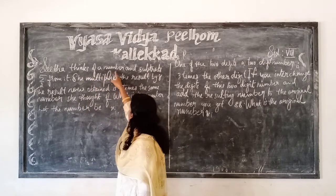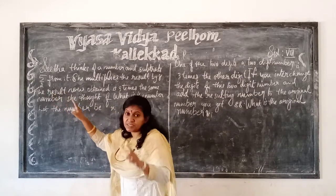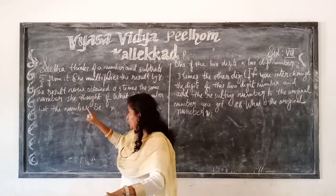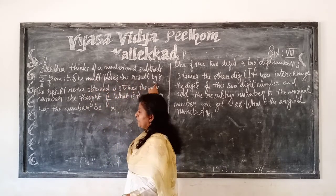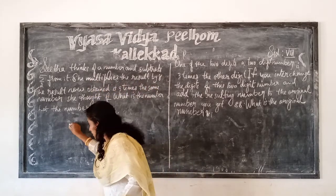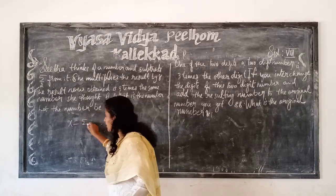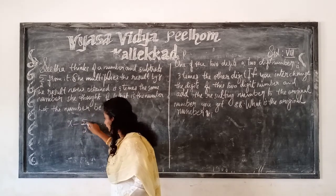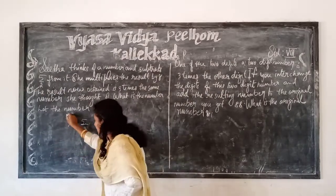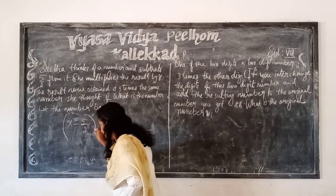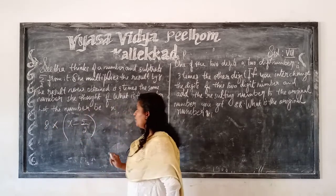This number was x and we subtract 5 by 2 from it. That means x minus 5 by 2. She multiplies the result by 8. So we get the result as x minus 5 by 2, and multiply it by 8. So 8 into (x minus 5 by 2).